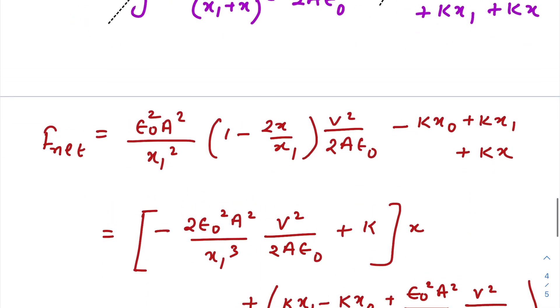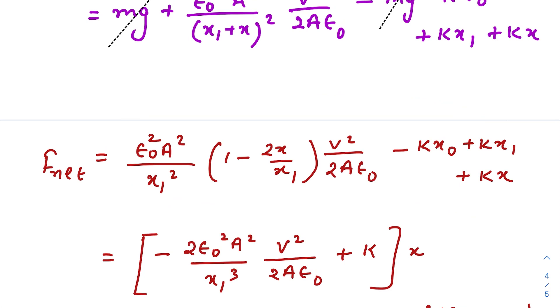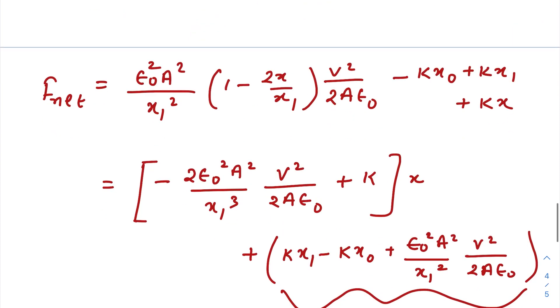So now what I am doing here, I have written F net. Just take the coefficients of x because this coefficient of x will only give you the equivalent k, equivalent constant SHM constant. So the coefficient of x is this one. Value of V we already know from our previous question and I have taken this whole thing as a constant because this thing is totally useless for this question.